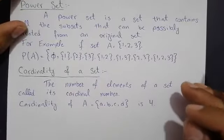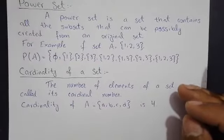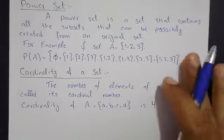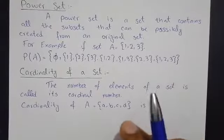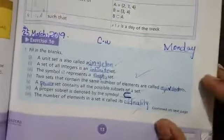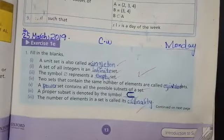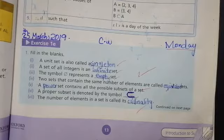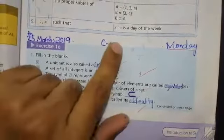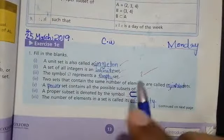اب ہم چلتے ہیں Exercise 1E کی طرف۔ 1E میں آج آپ کا Bookwork ہے۔ یہ Definitions آپ نے write کر لینا ہے اور یہ آگے آپ کا Bookwork آ جائے گا۔ Bookwork میں جو کام ہے وہ لکھا ہوا ہے۔ آج کی date آپ نے اوپر لکھ لینا ہے — Classwork Monday۔